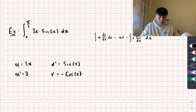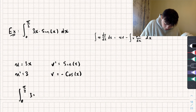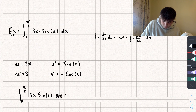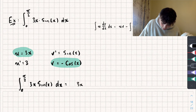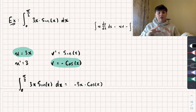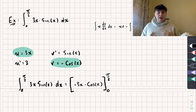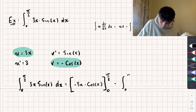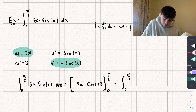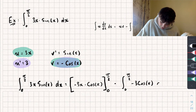From here I'm going to put everything into my integration by parts formula. We're integrating between 0 and π/2, and we want to find the integral of 3x·sin(x) with respect to x. The first part is uv: that's u multiplied by v, so negative 3x·cos(x). Because this is a definite integral, we evaluate this part between 0 and π/2. Then we subtract the integral between 0 and π/2 of v multiplied by the derivative of u — so the integral of negative 3·cos(x) with respect to x.